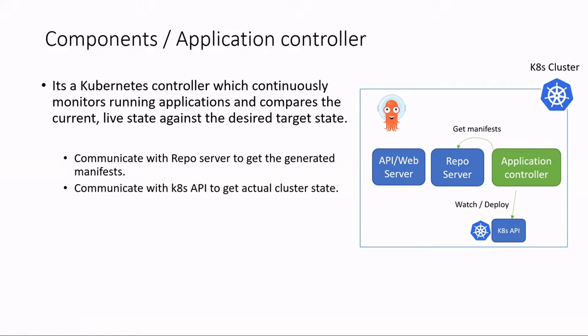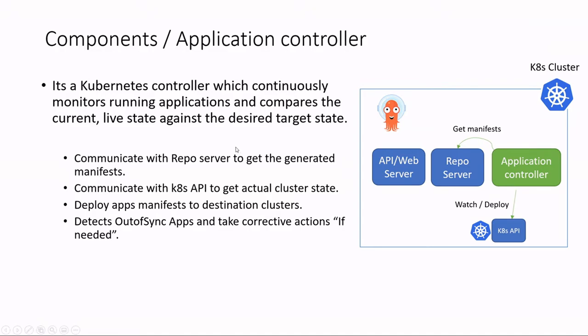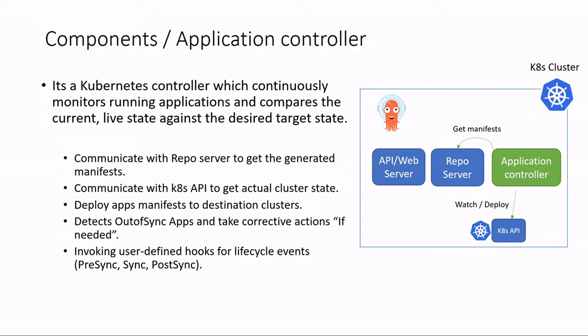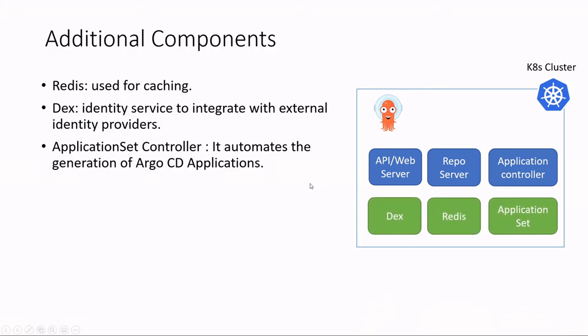The application controller communicates with the repo server to get the generated manifests, and also communicates with the Kubernetes API to get the actual application state. It deploys the application manifests to destination clusters, detects out-of-sync apps, and takes corrective actions if needed. Argo CD also has hooks you can define, such as pre-sync and post-sync — for example, to send a notification after syncing. These hooks are the application controller's responsibility.